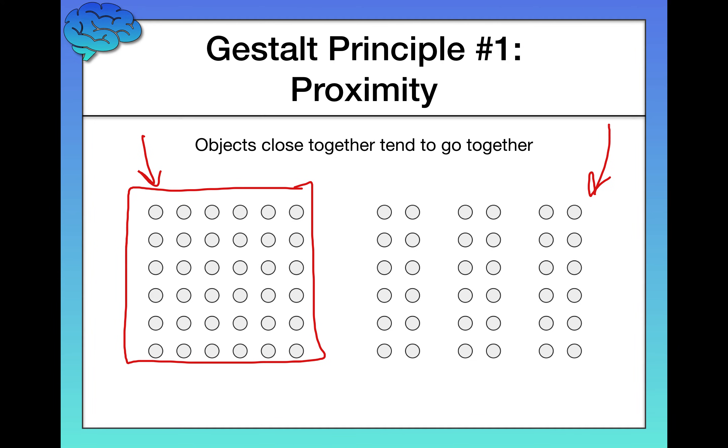In contrast, if you look at the right side of the screen, you'll probably perceive this as three individual rectangles because I've added space in between each of these lines, right? So I'm decreasing the proximity on the right hand side of the screen. And as a result, you tend to see them as different kinds of objects. This illustrates the principle of proximity.